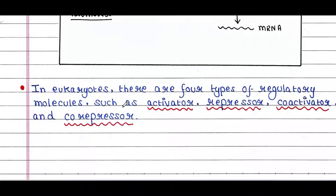In eukaryotes, there are four types of regulatory molecules: activator, repressor, co-activator, and co-repressor. Basically, gene regulation in prokaryotes and eukaryotes is almost similar. We will talk about them one by one.